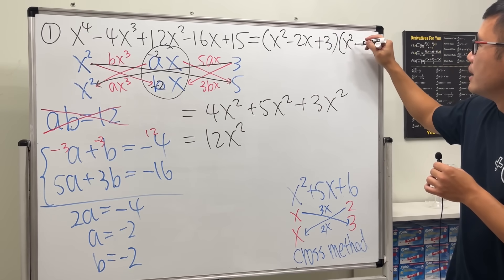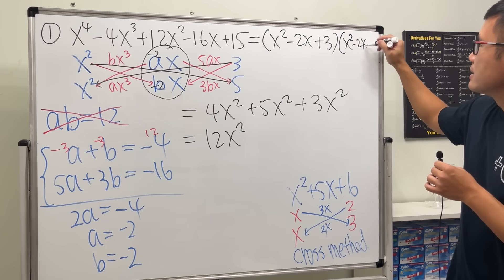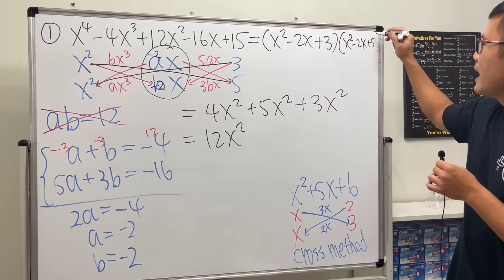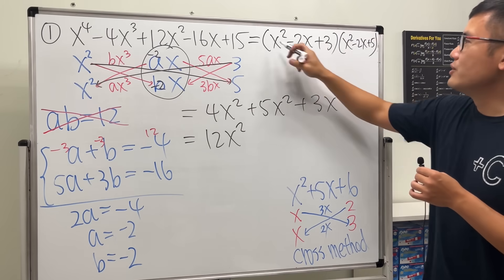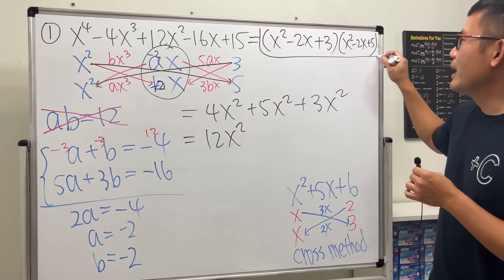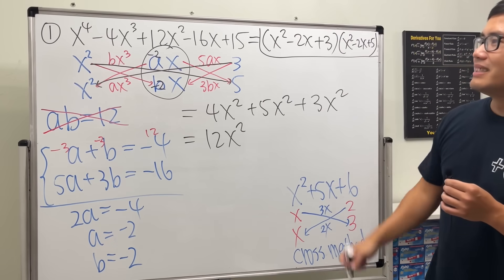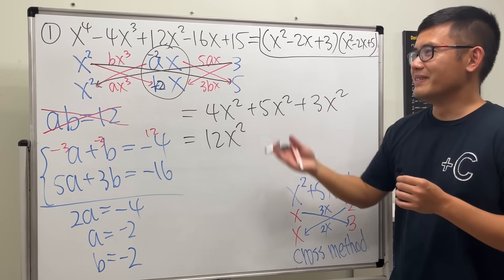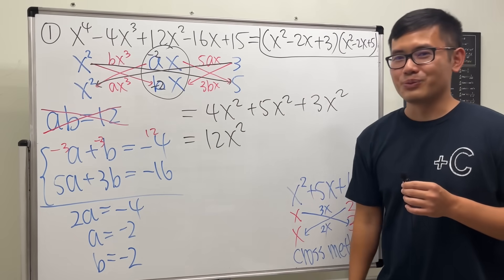Reading across the factors, the answer is x squared minus 2x plus 3 times x squared minus 2x plus 5. And there we have the factorization for the first problem.